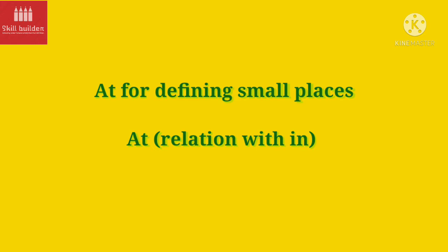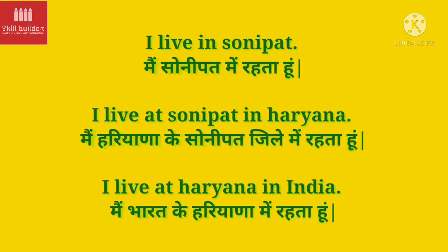Let's learn the next use of 'at' — for defining small places, and its relation with 'in'. As I told you, many of you must be thinking 'at' ka meaning toh 'mein' hota hai. So 'at' ka meaning kab 'mein' hota hai aur 'at' aur 'in' ka kya relation hai — woh hum yeh wale step mein seekhne jaae hain. 'At' ko hum chote places ko define karne ke liye bhi use karte hain. For example: I live in Sonipat. Mein Sonipat mein rehta hun. I live at Sonipat in Haryana. Mein Haryana ke Sonipat jile mein rehta hun.